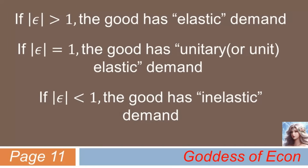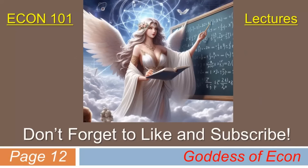Lastly, when the absolute value of PED is greater than 1, economists say the good has elastic demand or is price elastic. When the absolute value of PED is exactly equal to 1, economists say the good has unitary elastic demand, or is unit elastic. When the absolute value of PED is less than 1, economists say the good has inelastic demand, or is price inelastic. I hope today's lecture was clear even for beginners. In my next Econ 101 lecture, I plan to cover this concept more in depth using calculus, along with some graphs. Please do visit again, and don't forget to like and subscribe. May God bless you all.